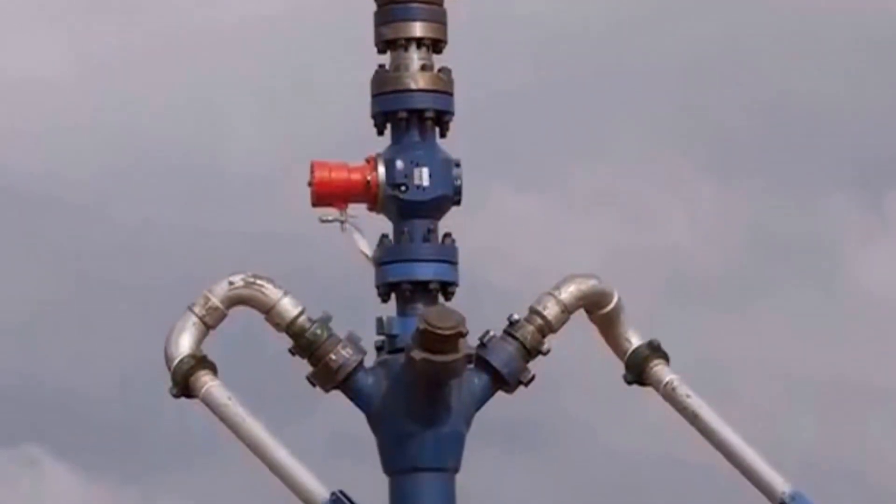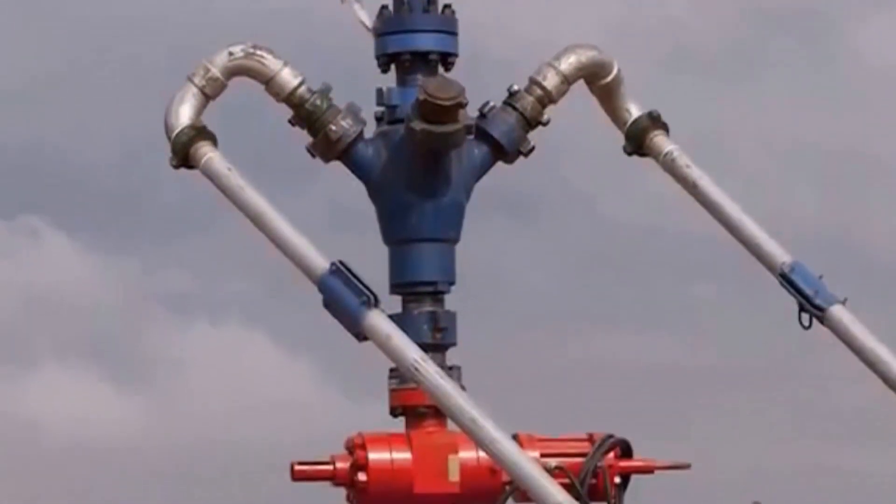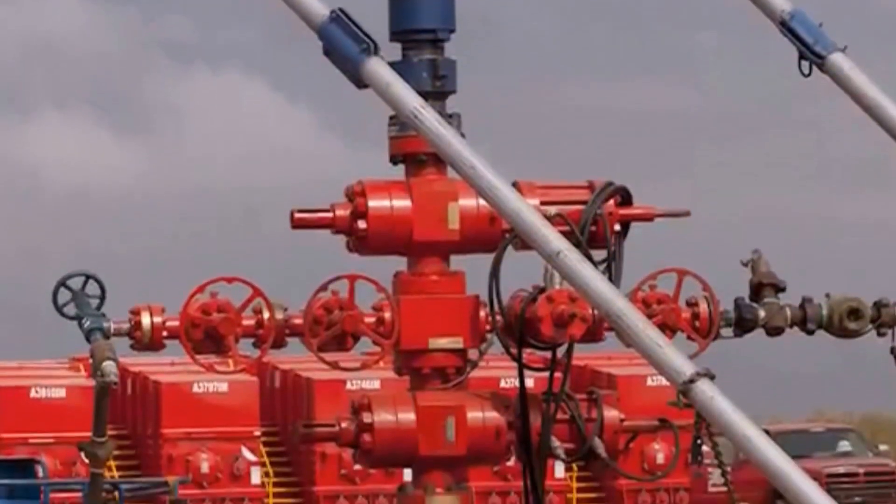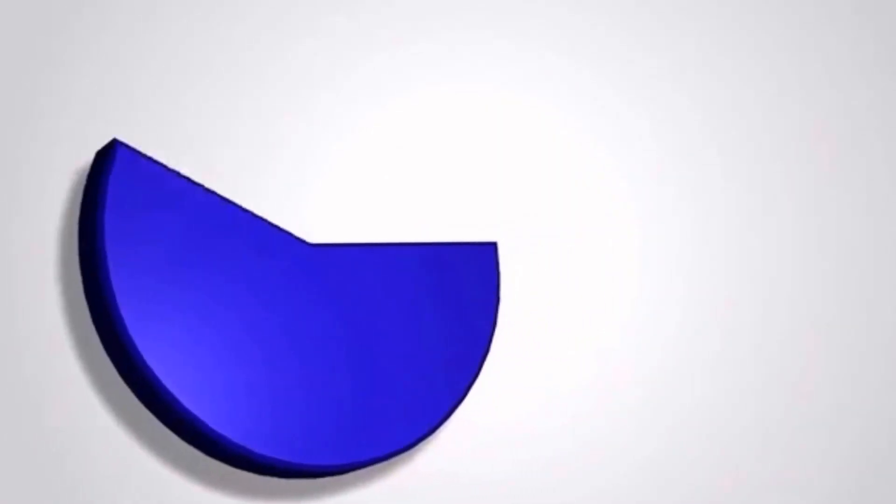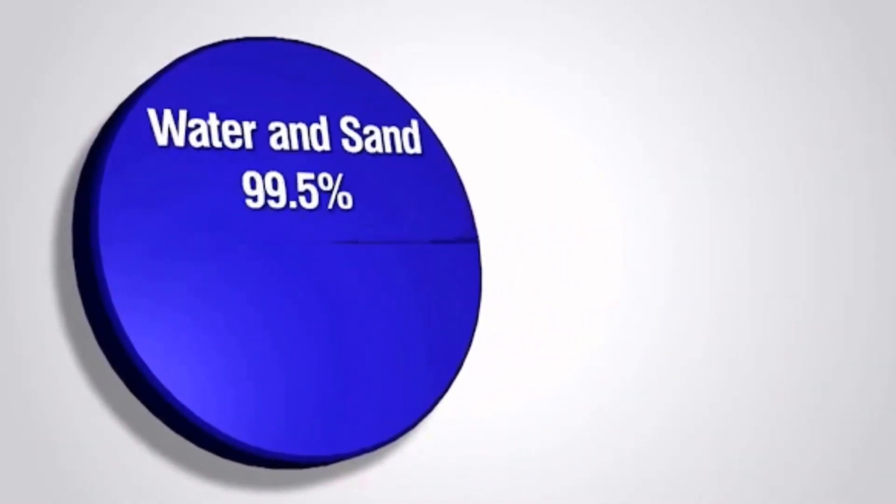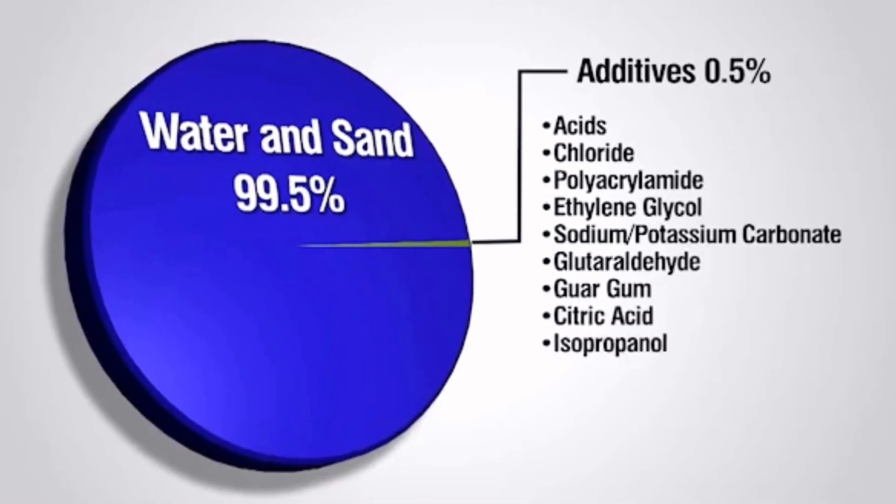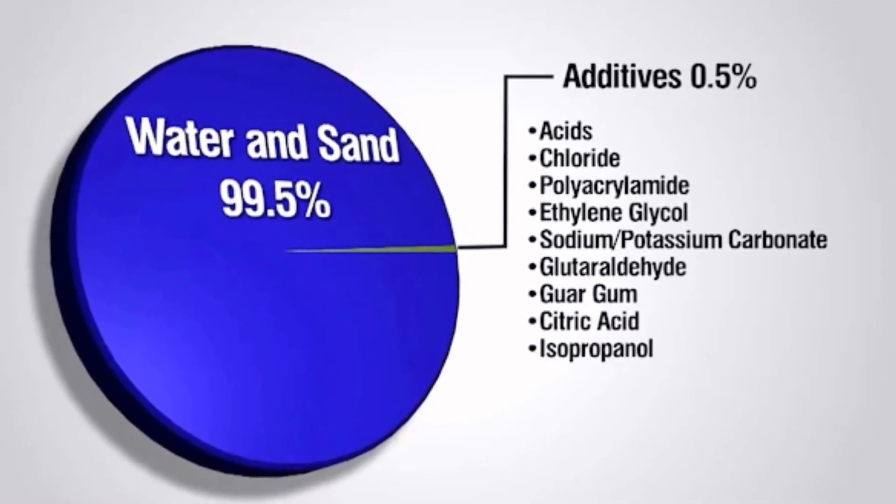The chemicals are generally for lubrication, to keep bacteria from forming, and help carry the sand. These chemicals typically range in concentrations from 0.1 to 0.5% by volume, and help to improve the performance of the stimulation.